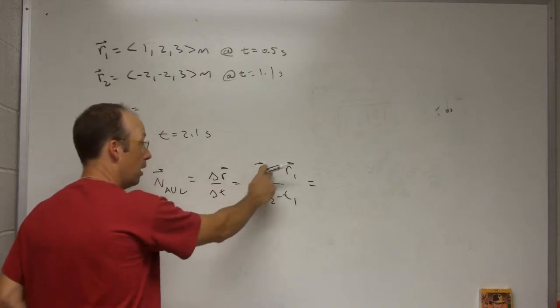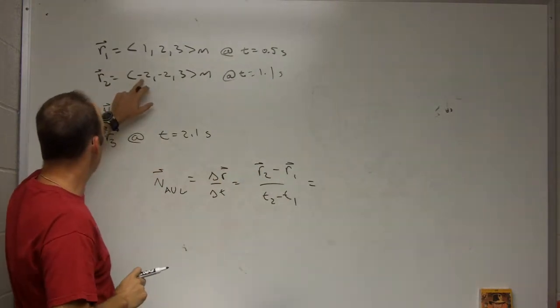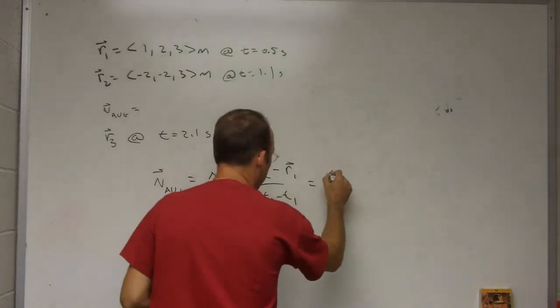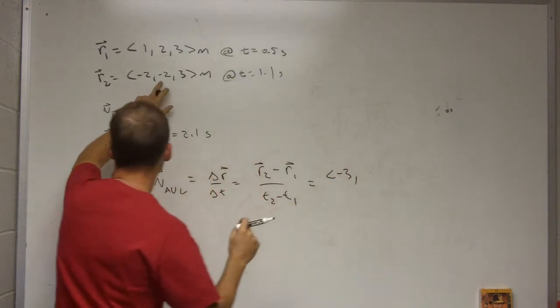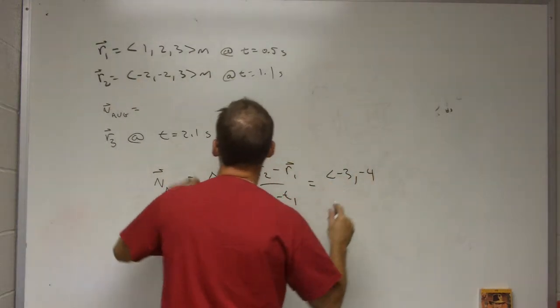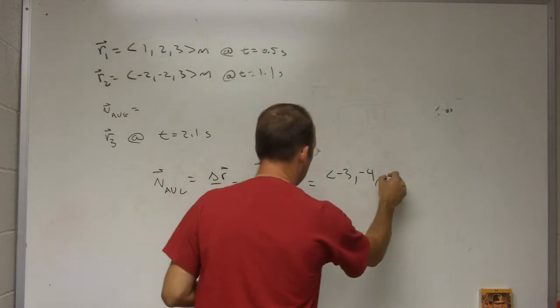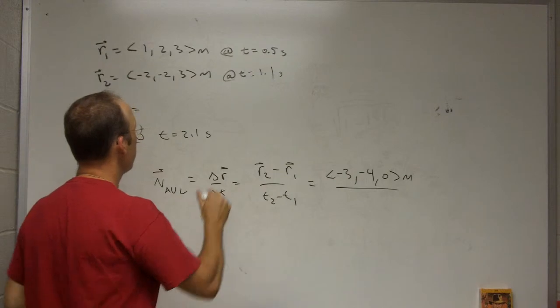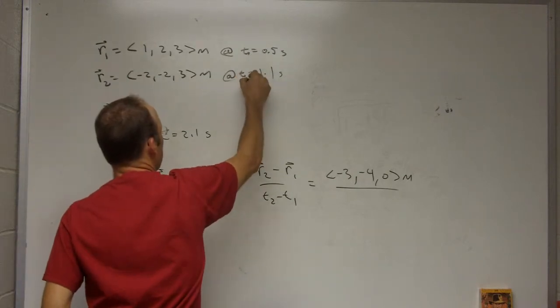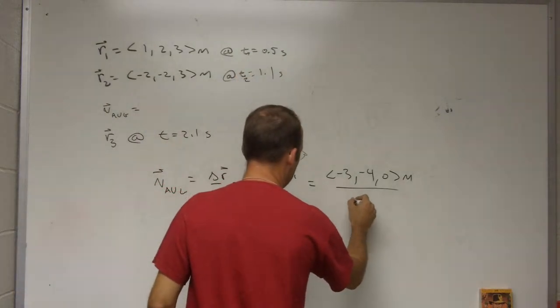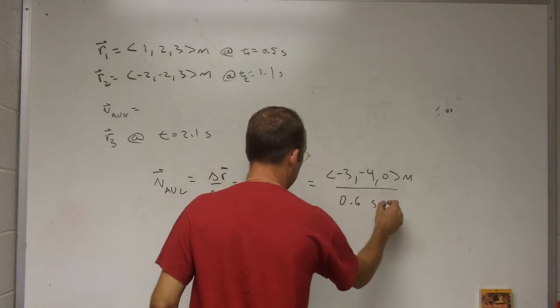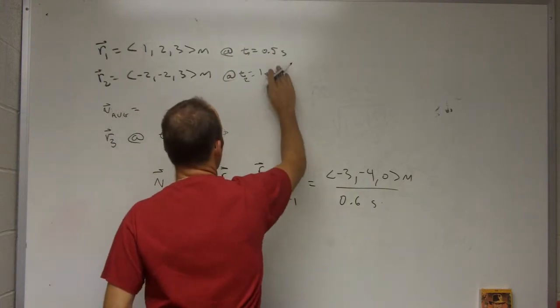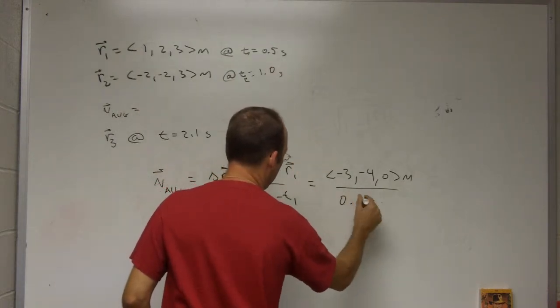So it ends at 2, it starts at 1. So if I do r2 minus r1, let me write this as a vector. Negative 2 minus 1 is going to be negative 3. Negative 2 minus 2 is negative 4. And 3 minus 3 is 0. Meters, I'm going to leave the units there. And then t2 minus t1, it's t1, t2, it's going to be 0.6 seconds. Okay, I should have picked a better number. Let's pick a better number. Let's do this as just 1. That way I don't need to use a calculator.